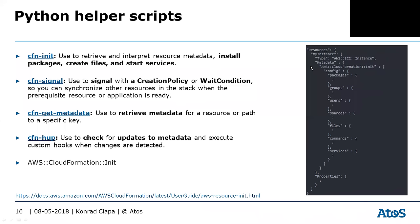As part of your resource metadata, you would define the AWS CloudFormation init class — that's where you define your packages to install, the groups and users to create. This is supported only by Linux virtual machines. You also define sources (where to get packages from), files (update existing or create new), commands to run within the OS, and services to start.